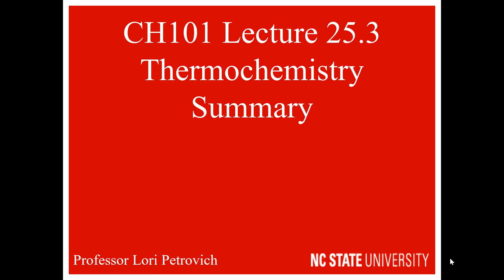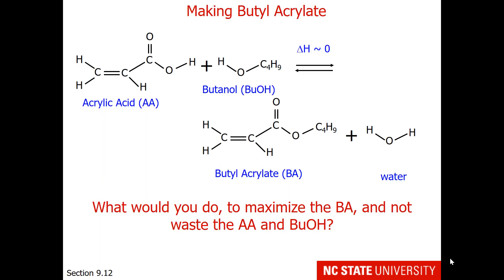This last bit is a summary of thermochemistry terms. There was a time when I worked in industry and one of my main goals was making butylacrylate, which is used in paint coatings. This involves taking acrylic acid and butanol to make butylacrylate and water. For the most part, the enthalpy change of this reaction is zero and the entropy change is also close to zero. So what would you do to maximize the butylacrylate and not waste the acrylic acid and the butanol?